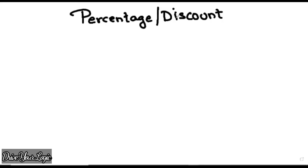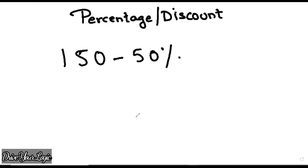Hello everyone, welcome back to Drive Your Logic. Today I am back with a very easy topic. Often you go to the market and you see on the marked price you get a discount. So today we are going to solve that type of sum. Suppose for example the cost of any item is 150 rupees and the shopkeeper is telling you that you will get 50 percent discount. How to get the answer? You need to find 50 percent of 150, then subtract from 150 — long process, right?